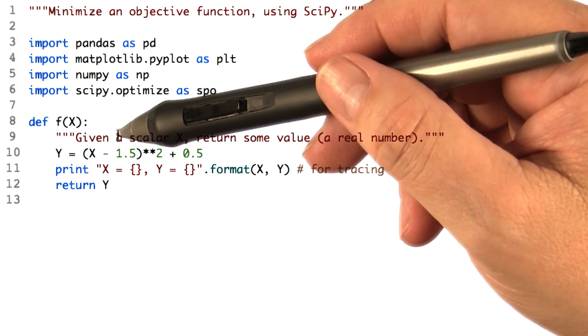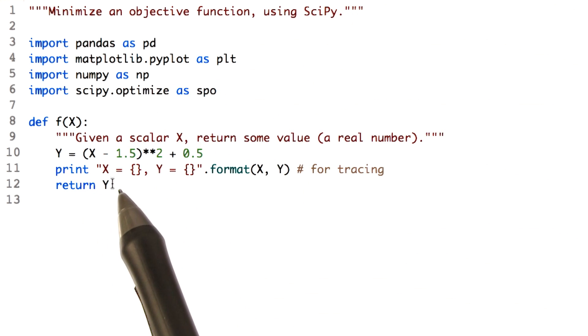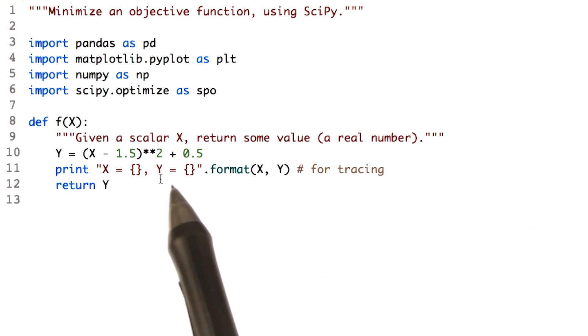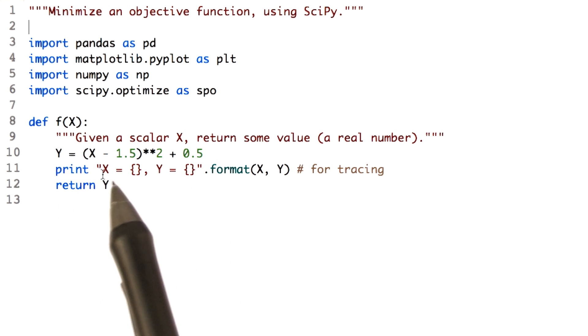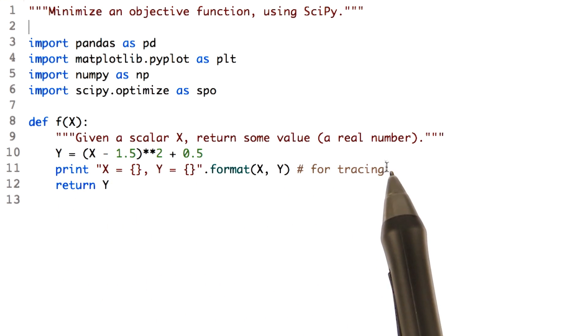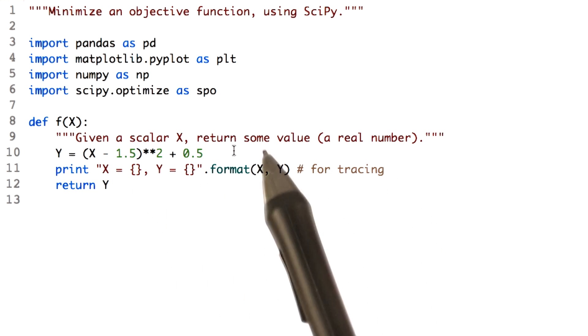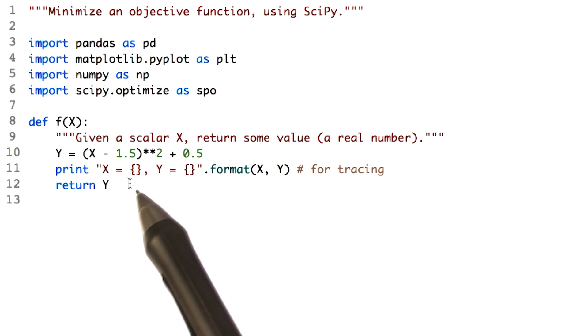And again, we're simply using x minus 1.5 squared plus 0.5. Now within this function, we're going to go ahead and print what the value is when we get called. It's just a little bit handier so that we can see what exactly is going on. But you don't have to have that, of course. And then we return y.